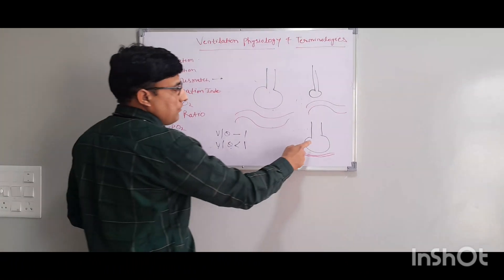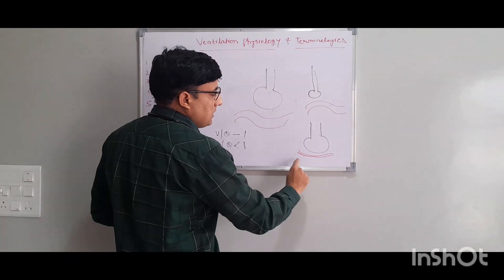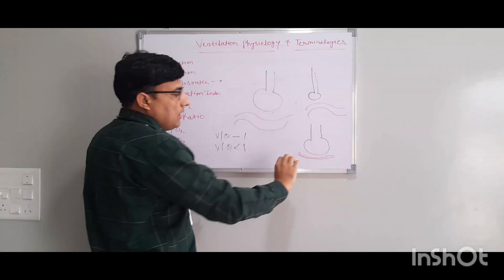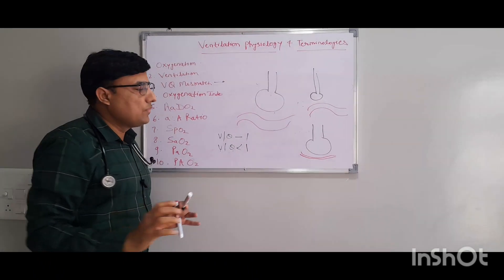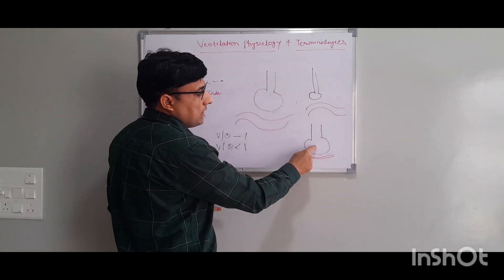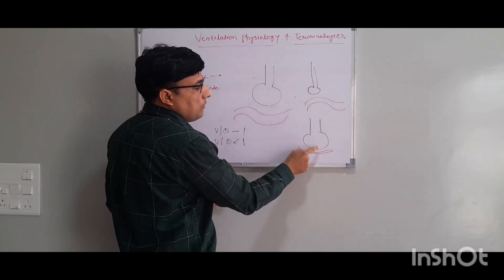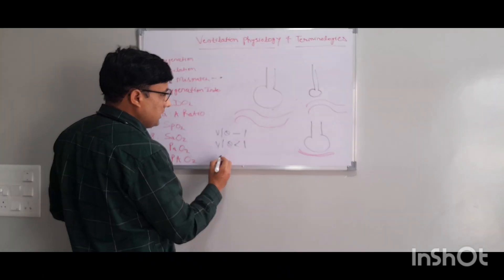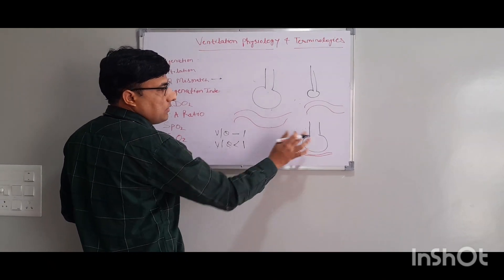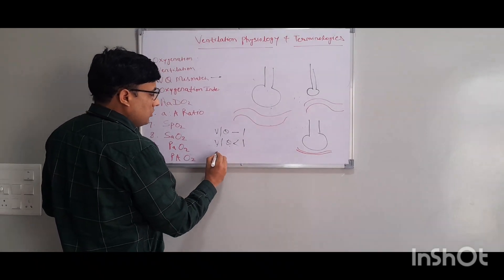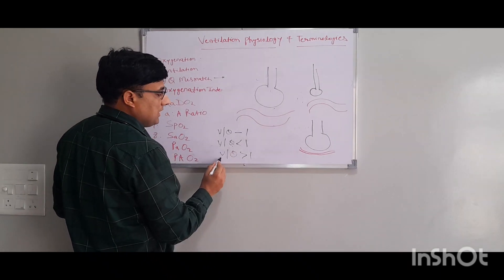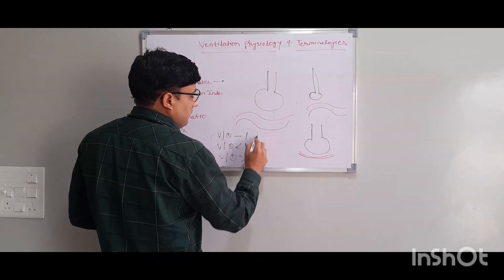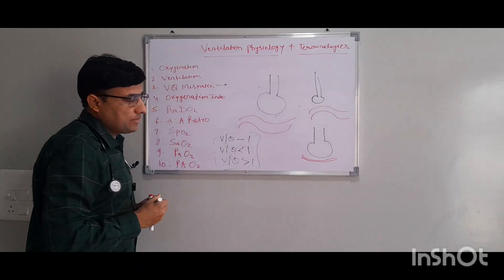In the third scenario, the alveolus is open but perfusion is not present — perhaps because of high pulmonary vascular resistance causing the pulmonary capillaries to be constricted. There is no perfusion but ventilation is there. There will not be any gas exchange here either, because there is no perfusion. This is dead space — VQ will be more than 1. This is a ventilation-perfusion mismatch.